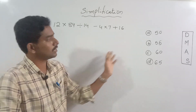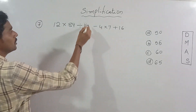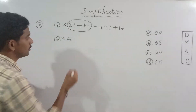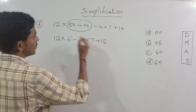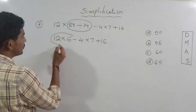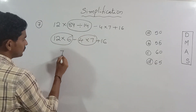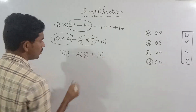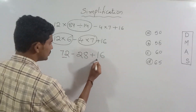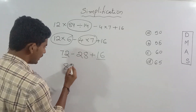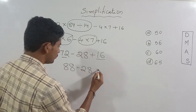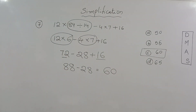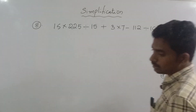12 into 84 is divided by 14, minus 4 into 7, plus 16. First year is division. So 12 into 14 table is 84 divided by 14. Division is divided by 14. Minus 4 into 7 plus 16. The division is divided by 16.